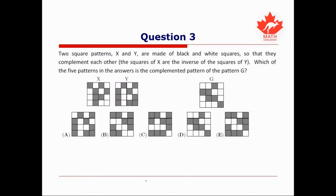For our third question, we're told that two square patterns X and Y are made of black and white squares so that they complement each other. What that means is that the squares in X are the opposite colors of the squares in Y. So the top left corner of X is all filled in black, but the top left corner of Y is the opposite — it's not filled in. And the top right corner of X is not filled in, but in Y it's the opposite — it is filled in. This pattern continues for all of the squares in X and Y.